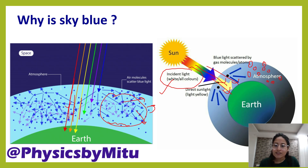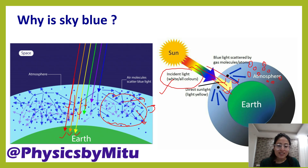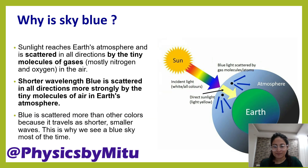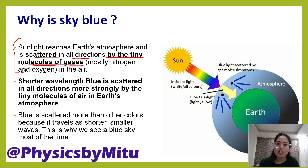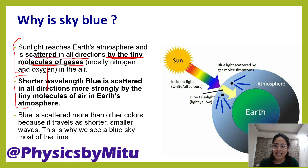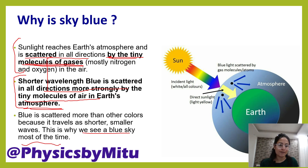The longer wavelengths — red, orange, yellow — reach the surface of the earth. The shorter wavelengths get scattered, and we see the blue light. So the answer is: sunlight reaches earth's atmosphere and is scattered in all directions by fine particles or tiny molecules of gases. Smaller particles scatter shorter wavelengths, so the shorter wavelength blue is scattered in all directions more strongly by tiny molecules of air in earth's atmosphere. That is why we see the blue color of the sky.